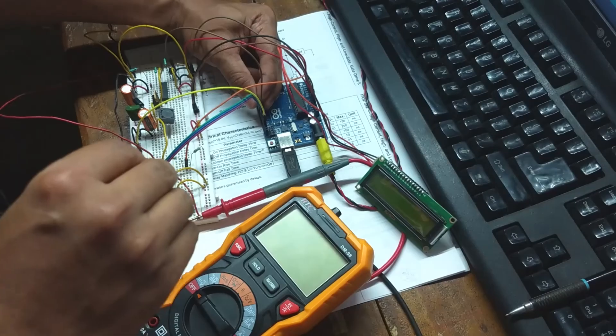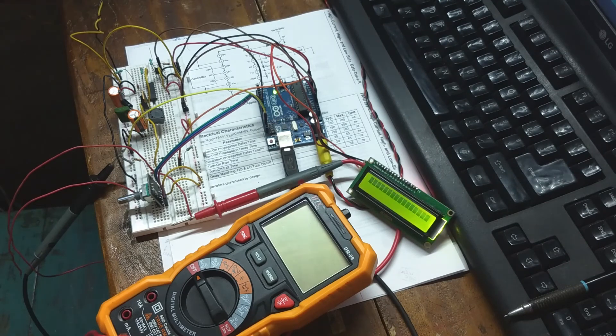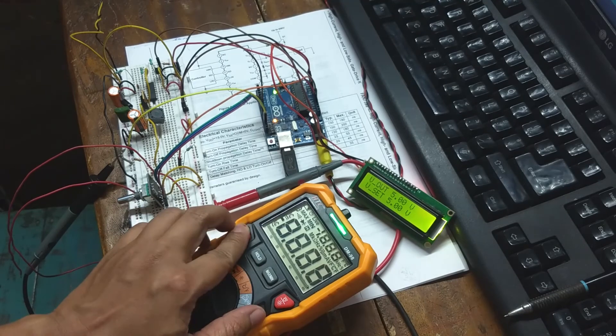For fun, I tried adding a rotary switch to change the output voltage and an LCD to display the output voltage and the set voltage. It also worked fine.